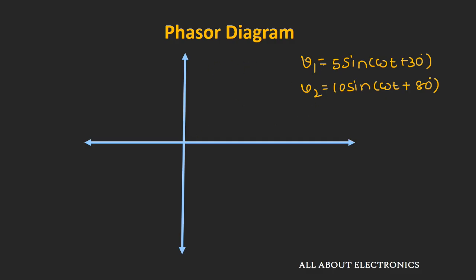The first signal is 5sin(ωt + 30°), so we draw a vector having an amplitude of 5 making an angle of 30 degrees with the horizontal reference axis. For the second signal, 10sin(ωt + 80°), the peak amplitude is 10, so we draw a vector having a magnitude of 10 making an angle of 80 degrees with the horizontal axis.